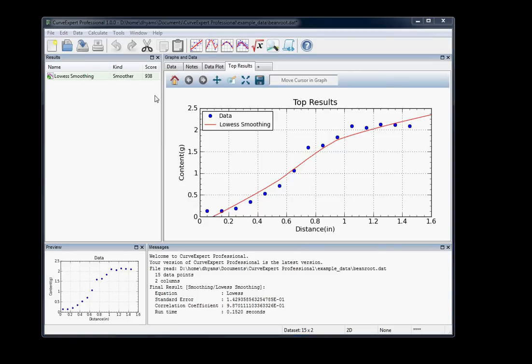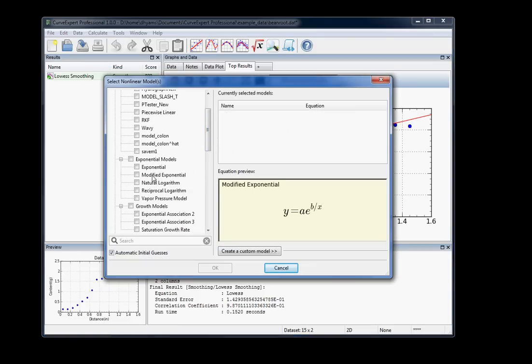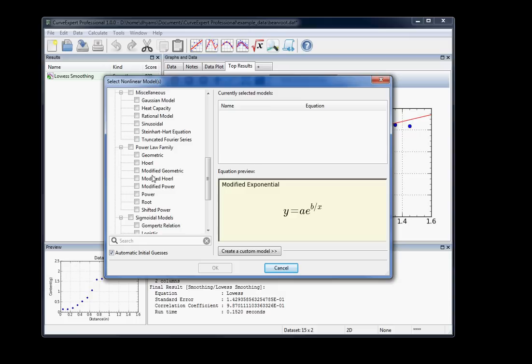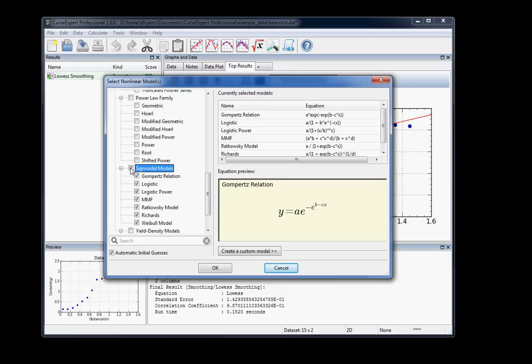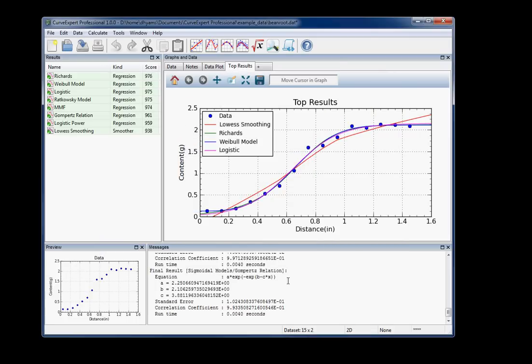What we'll do is choose Non-linear Regressions, and we'll select the sigmoidal family, okay, and calculate all of those at once. And so we'll just say okay. You can see all of those calculate, and as we point to those in this results area, you can see the preview updating to match.